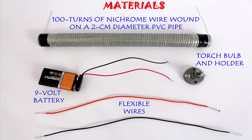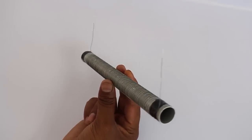We just need a 9-volt battery, torch bulb, holder, flexible wires, and 100 turns of nichrome wire wound on a PVC pipe.